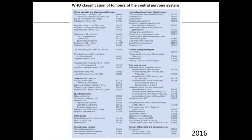This is a lecture on gliomas, and this is a good table to start with, particularly for the residents. This is the most recent WHO classification of CNS tumors, published in 2016. Most of the CNS tumors that we deal with are gliomas. Grossly and roughly, you can classify them first into astrocytic and oligodendroglial tumors — tumors that arise from astrocytes or oligodendrocytes.